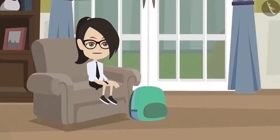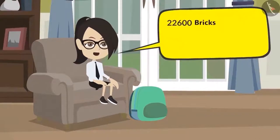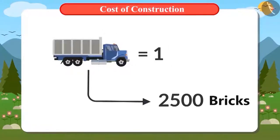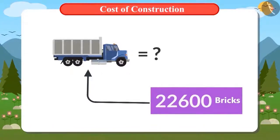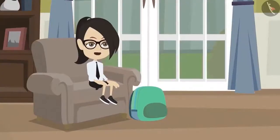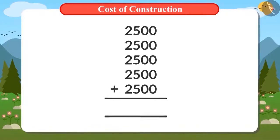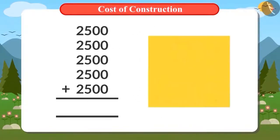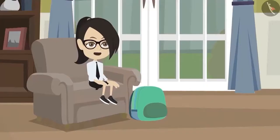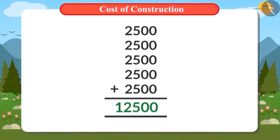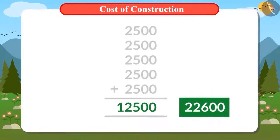Now we have to find out how much it will cost to bring these bricks home. But first, we need to find out how many trucks of bricks will make 22,600 bricks. 2,500 bricks come in a truck. To find how many trucks are needed, we add 2,500 repeatedly. Adding 2,500 five times — we can also multiply 2,500 by 5 — gives 12,500, which is smaller than 22,600.